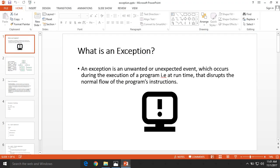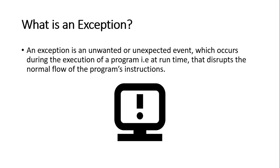What is the exception? The exception is an unwanted or unexpected event which occurs during the execution of a program. That means when a program is running, some event or some disturbance will occur — it's called the exception.